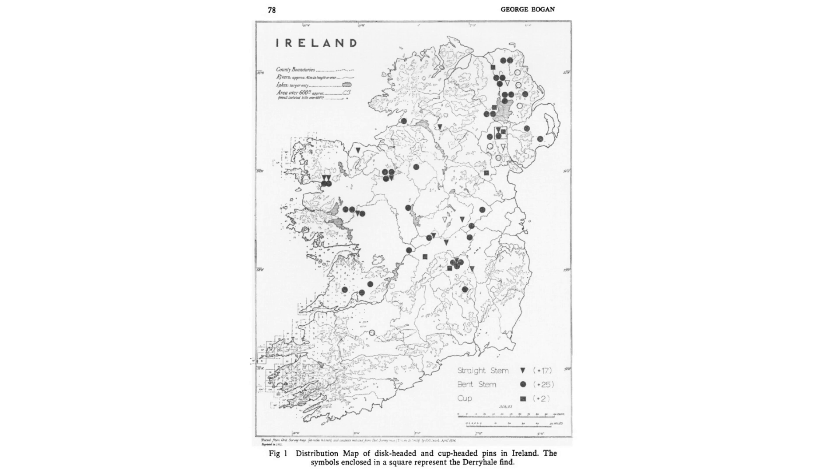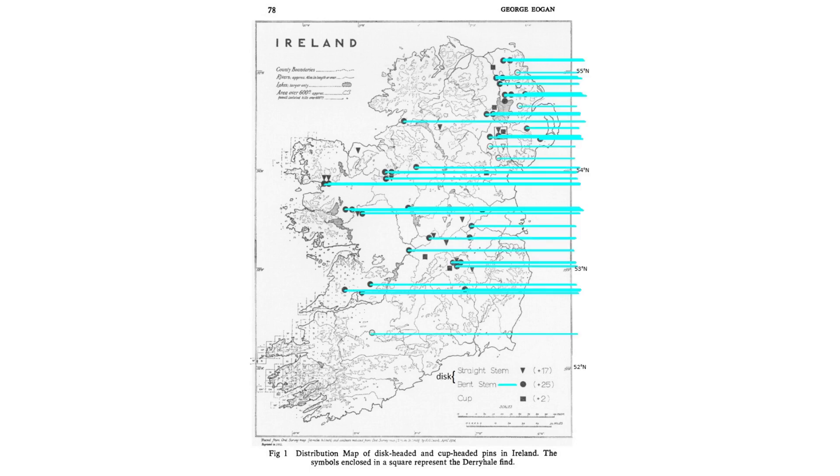The exact provenience of this particular pin is unknown, but Ogun's study of Bronze Age pins included a map of find sites for these types of artifacts. By highlighting the locations of bent stemmed disc pins, I wanted to identify a rough concentration of latitude ranges. Most pins of this type were found ranging between around 53 and 55 degrees north, so for this study, the middle value of 54 degrees north was used.